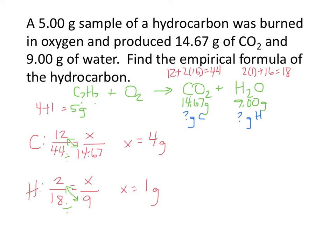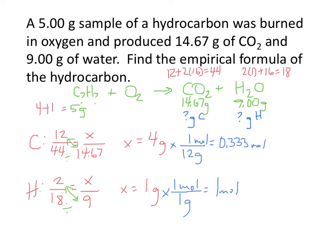The empirical formula requires moles, not grams, so we're going to convert. We divide carbon by 12 because 12 grams equal 1 mole, and divide hydrogen by 1 because 1 gram equals 1 mole for hydrogen. We get 1 for carbon and 0.333 (one-third) for hydrogen. Now we divide both by the smaller value so the smallest becomes 1. Dividing 1 by 0.333 gives 3, so the empirical formula is 1 carbon for every 3 hydrogens, or CH3.